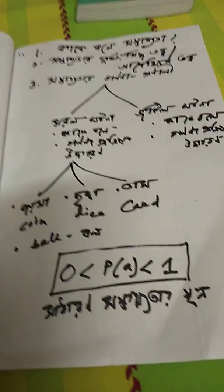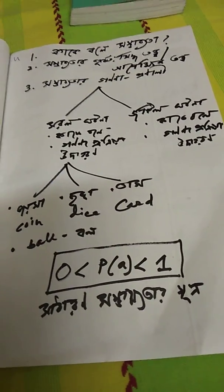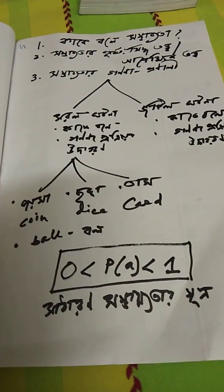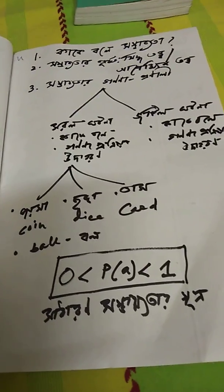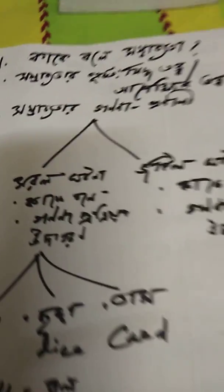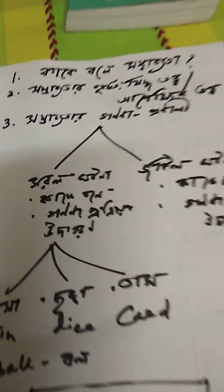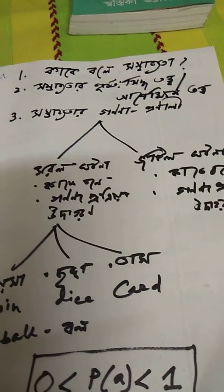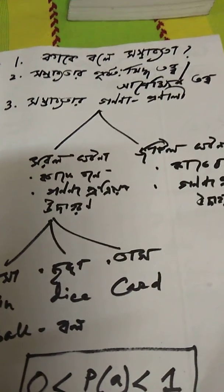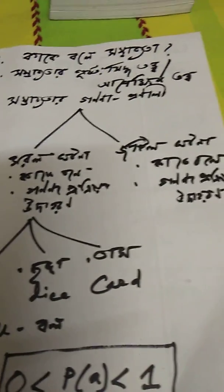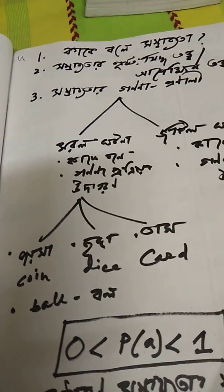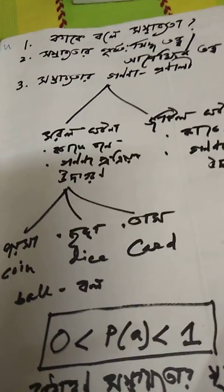This is the form of probability. Probability is the form of probability. The first thing we said is probability of probability — the probability calculus.